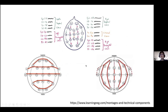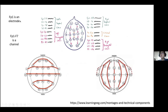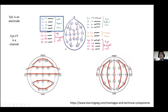There are a few technical terms to know: FP1 is an electrode; when FP1 is linked to F7, that is a channel. A group of channels together becomes a chain, and when different chains are configured together into a topography map, it is known as a montage.